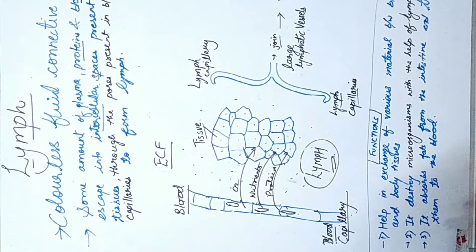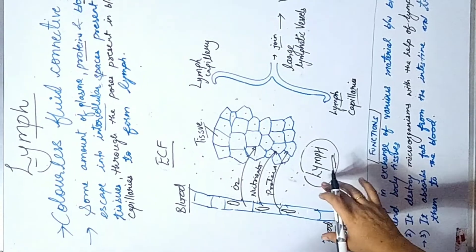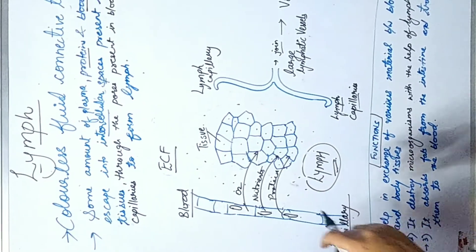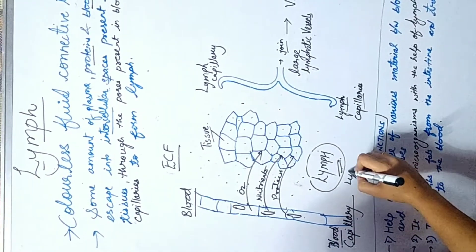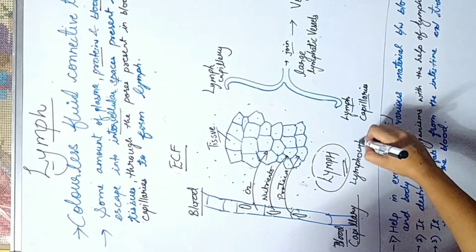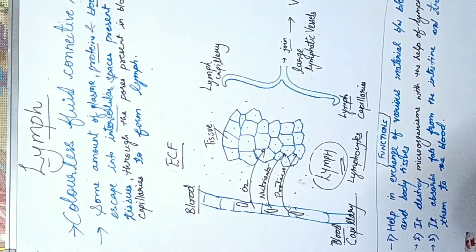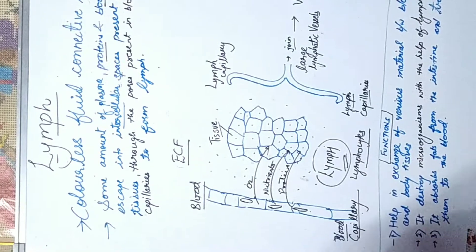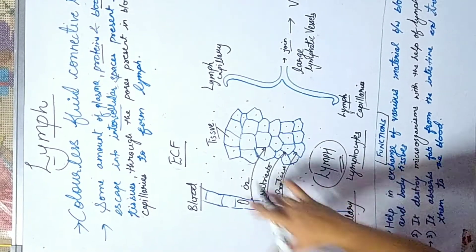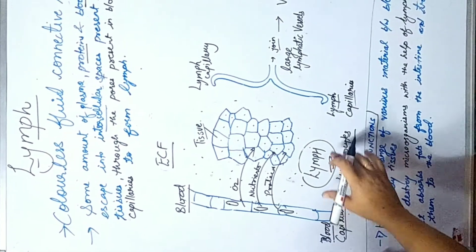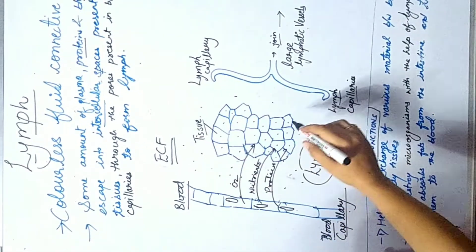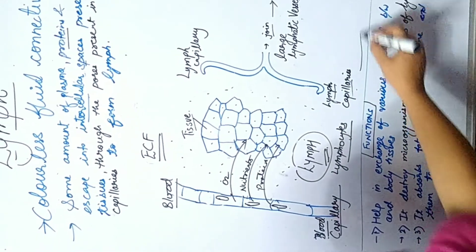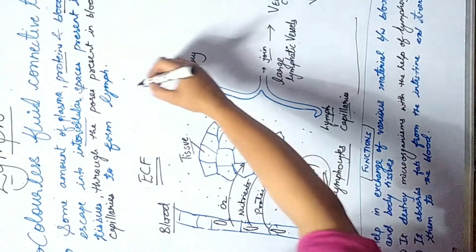Lymph composition includes some proteins, other nutrients, plasma content, and lymphocytes — which are a type of WBC that fight against foreign antigens and engulf microorganisms, providing immunity. This lymph, also called extracellular fluid, is finally collected through lymph capillaries, which form a separate circulatory medium known as the lymphatic system.